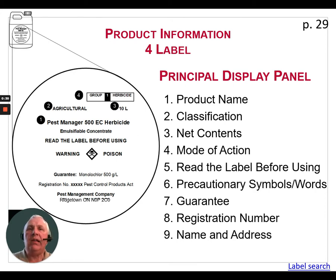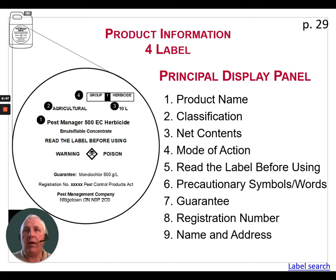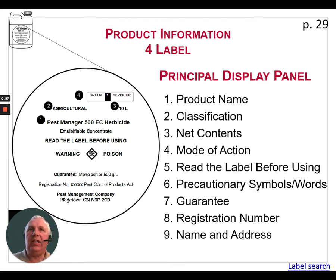All nine items listed here are common to any pesticide label, whether you're buying a thousand-liter tote of a herbicide or a small 15-milliliter bottle of ant killer at the grocery store. You will find these items in common on the principal display panel. The first thing we see is the product name.